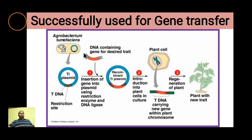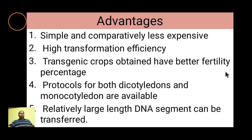This diagram shows how the gene is successfully transferred: the T-DNA is excised, the gene of interest is inserted into the plasmid, it is recombined using DNA ligase, introduced into the plant cell using the bacteria, and the plant is regenerated to obtain a plant with new traits.